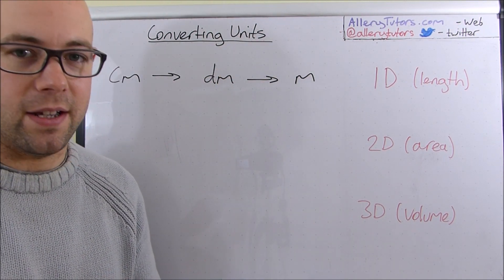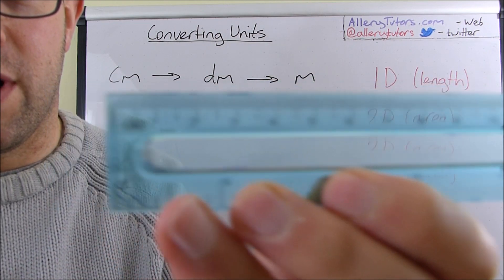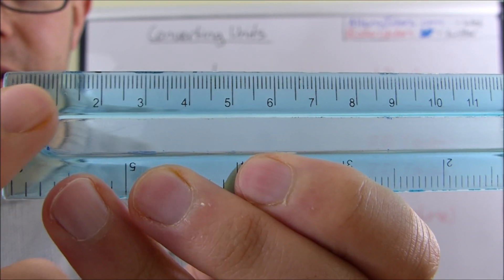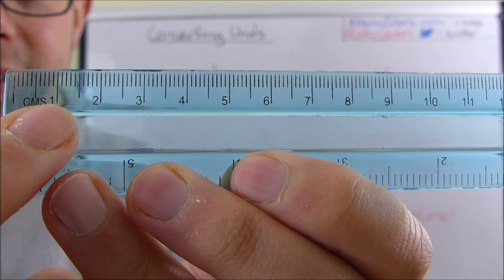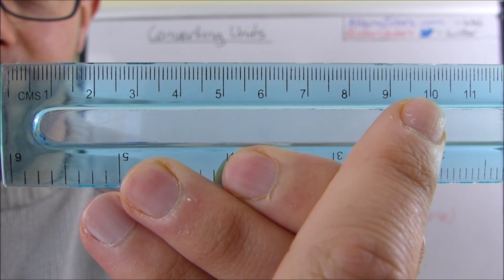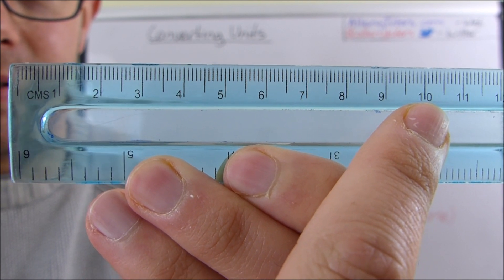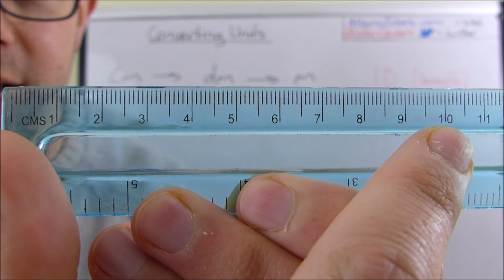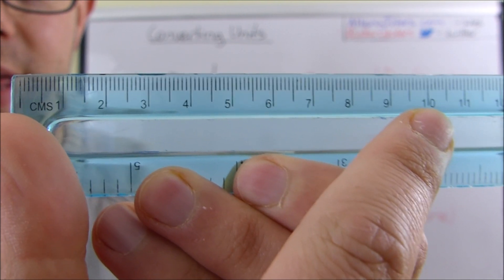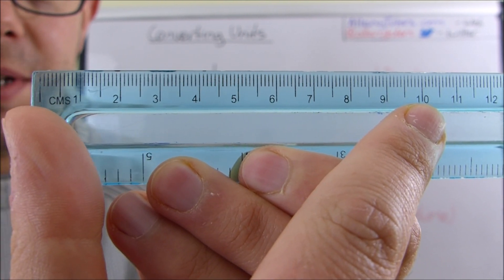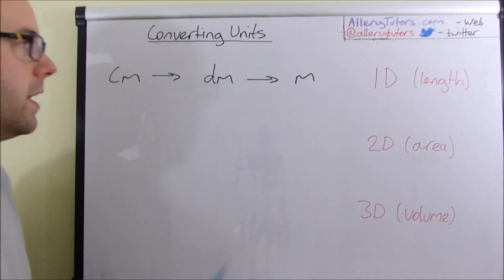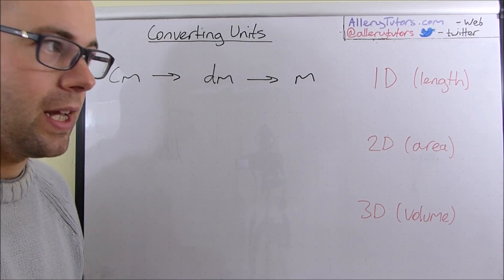A ruler is a good prop for this — you can see there we've got a centimetre. A decimetre is basically just up to here, which is 10 centimetres. So a decimetre, the length of a decimetre, is that. Pretty simple. And obviously there are 10 of them in a metre because a metre is 100 centimetres — that's why we call it a decimetre. And obviously the metre is the full length.